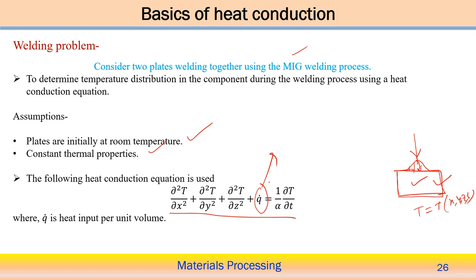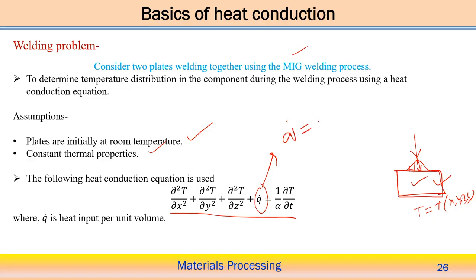Here we use the heat conduction equation with a heat generation term, because in the welding process the arc interacts over the substrate. We can consider either a surface flux or, since the arc penetrates the surface, treat it as a volumetric heat source term. This volumetric heat source is incorporated in the form of the internal heat generation term q-dot in the basic heat conduction equation. Q-dot represents the internal heat generation per unit volume — this is the volumetric heat source in the welding process, and transient analysis is used.